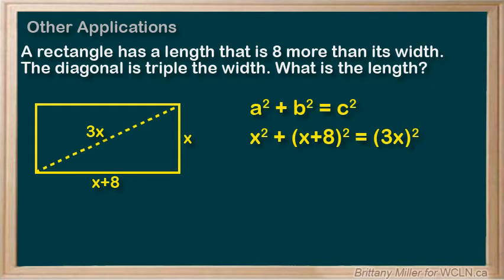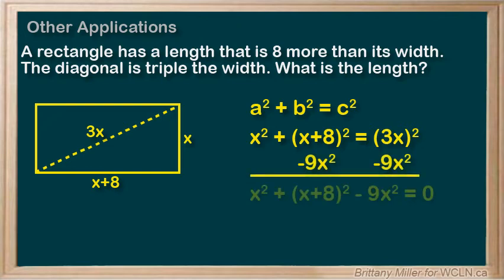Now you get to choose your adventure. You can graph both of these things separately and see where they cross, or you can rearrange this equation so that everything is on the same side and see where it crosses the x axis. That's up to you, but I'm going to do the second option. So I just subtract 9x squared from both sides, and then this is what I'm going to throw into Desmos to graph.